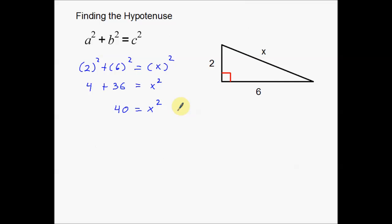Now I need to get x by itself, which means I need to get rid of the squared. To get rid of the squared, I need to square root the problem. Squaring and square rooting cancel each other out, so that leaves me with just x. And just as you know from solving equations, whatever I do to one side I must also do to the other side — so I also need to take the square root of 40.